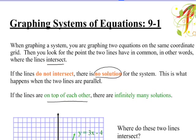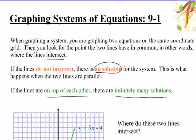If the lines are on top of each other, there are infinitely many solutions. We found these when solving algebraically, when you got 0 equals 0 or 4 equals 4. This means those two lines are exactly the same, so they share all the same solution points.